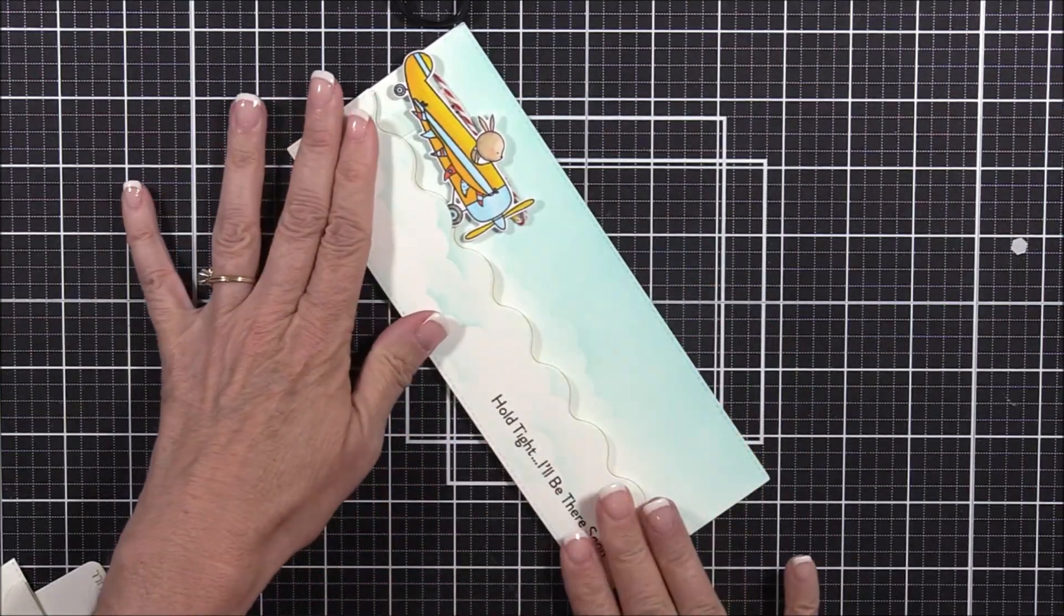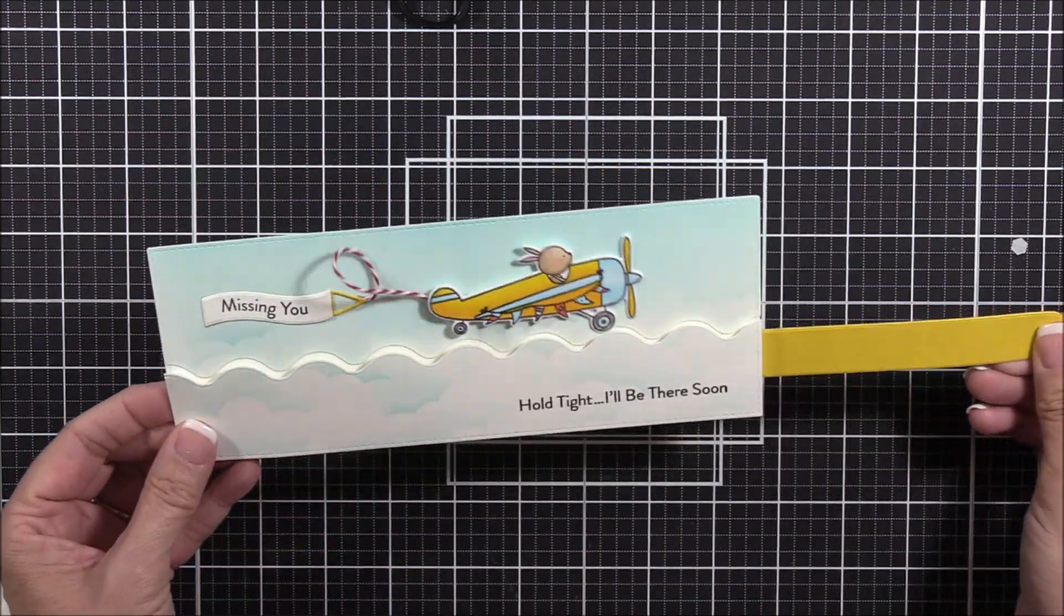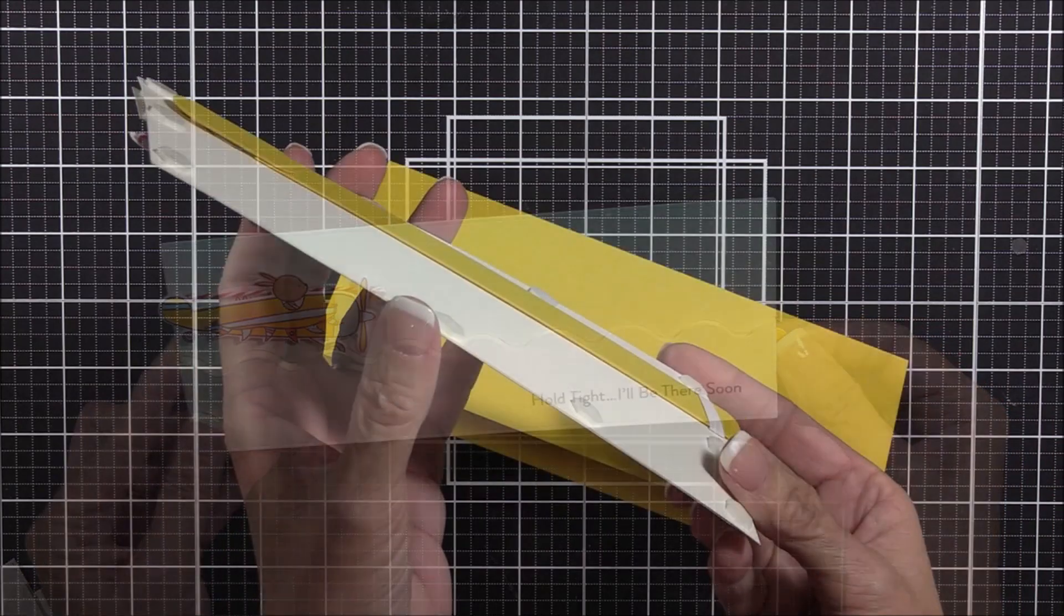Before I did that, though, you'll notice that I stamped one of the sentiments from the High Flying Adventure stamp set onto the lower right corner of that panel, but I forgot to capture that on camera.